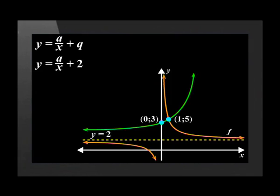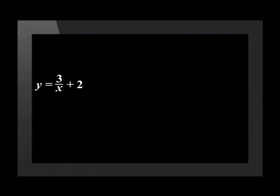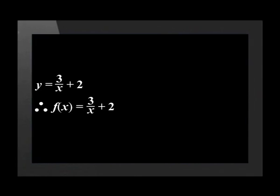Step 3: find a point on the function and substitute it into the new equation. There are two points indicated on the diagram, but only one lies on curve f. That point is (1, 5). Substituting: 5 equals a over 1 plus 2, so 5 minus 2 equals a, which means a equals 3. Now that we have the values of a and q, the standard equation for the hyperbola is y equals 3 over x plus 2. In functional notation: f of x equals 3 over x plus 2.